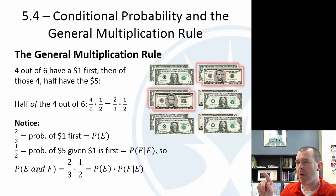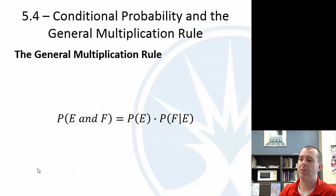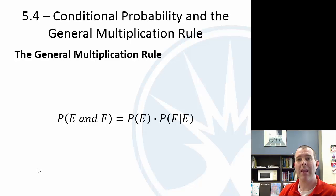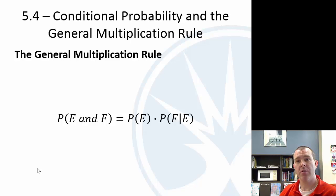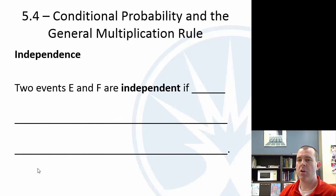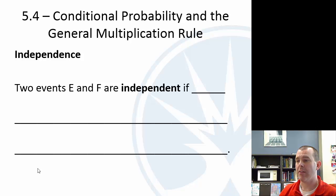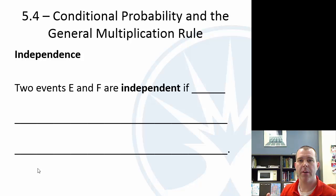You might want to rewind and watch that again. What this gives us is the general multiplication rule: the probability of E and F both occurring equals the probability that E occurs times the probability that F occurs given that E has already occurred. This leads us to the concept of independence. Two events E and F are independent if the occurrence of one doesn't affect the probability of the other — whether one happens or not doesn't change the probability of the other.